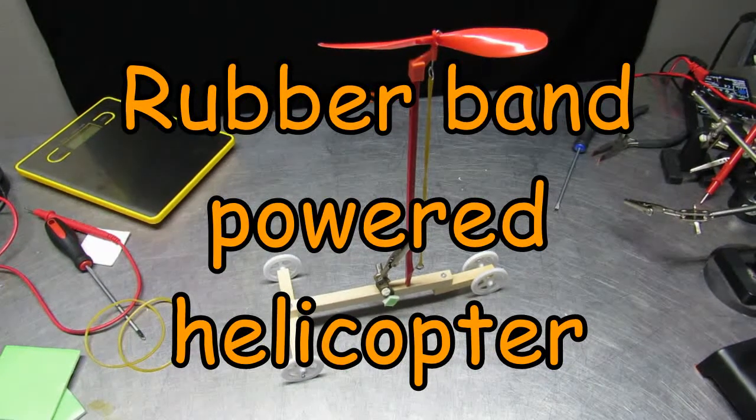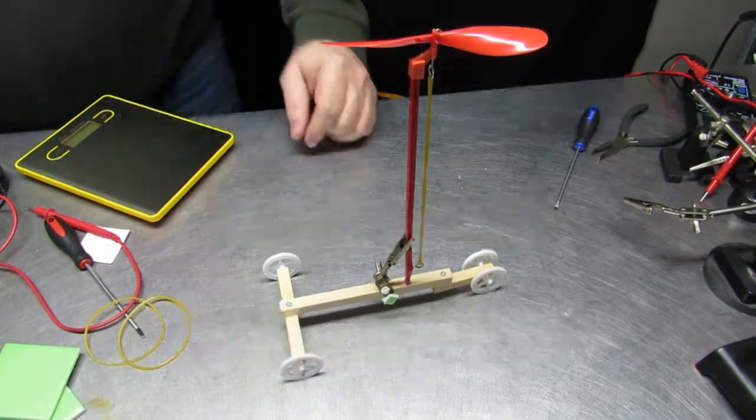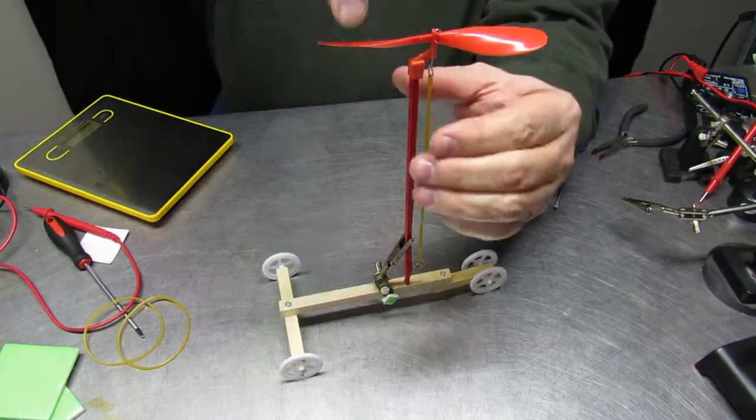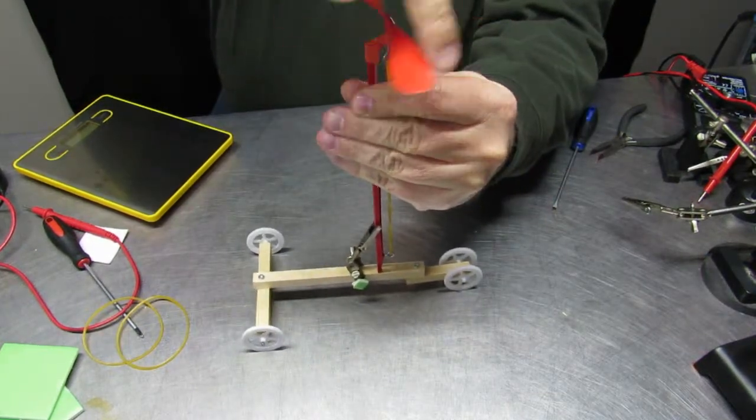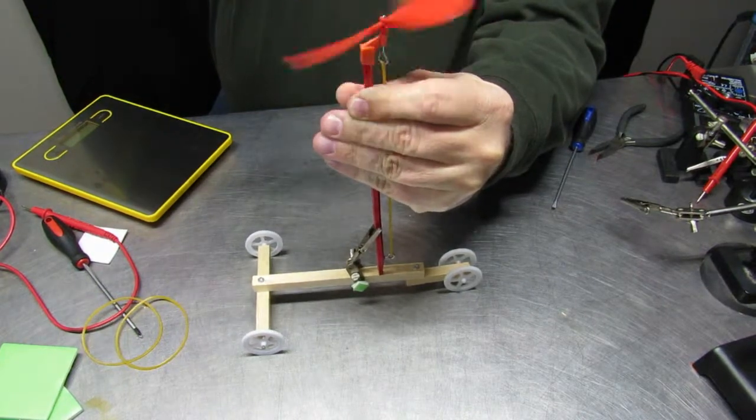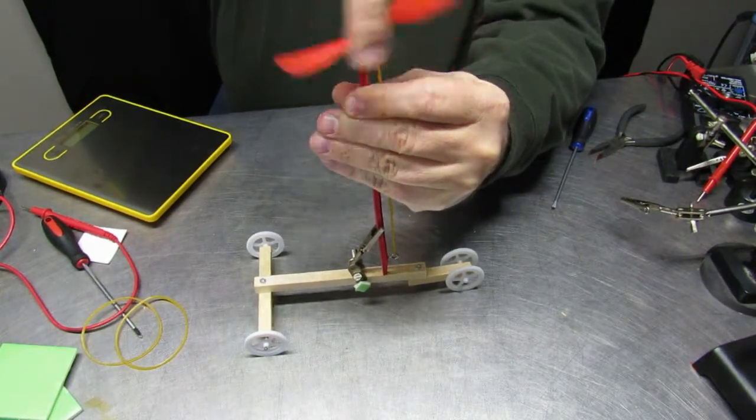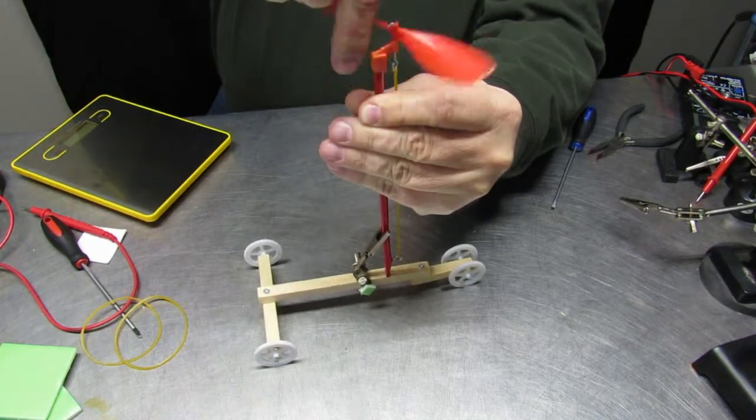Today's two minutes of science is all about a rubber band powered helicopter. If you look closely, you can see that this is the same rubber band powered vehicle that we modified so we can put the power source, the rubber band and blade, in any orientation to do many different types of experiments.